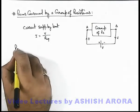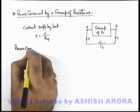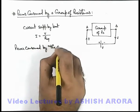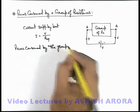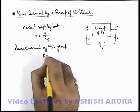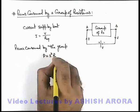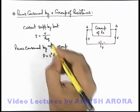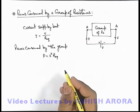And in this situation if we calculate the power consumed by the group, then this can be directly written as P equals I squared R equivalent because the whole group is equivalent to a single resistance of value R eq. So this will be I squared R eq.